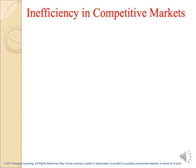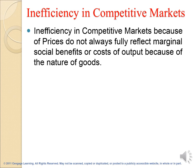Sometimes, this competitive market produces inefficiency. This inefficiency in the competitive market occurs because prices don't always fully reflect the marginal social benefit or the marginal social cost of the output, because of the nature of the good.